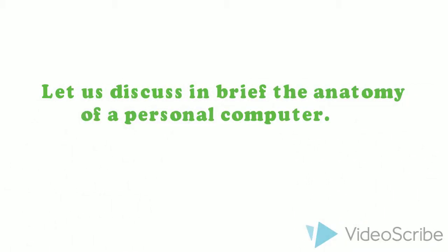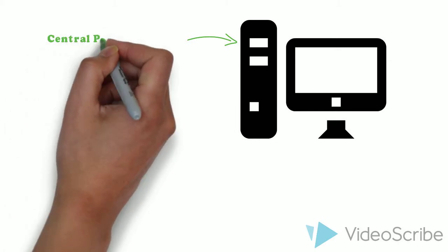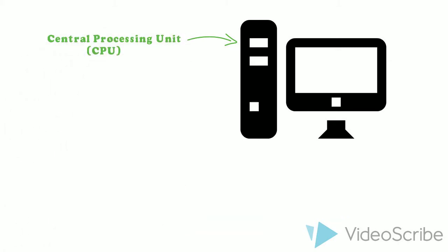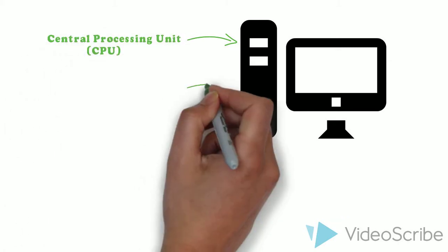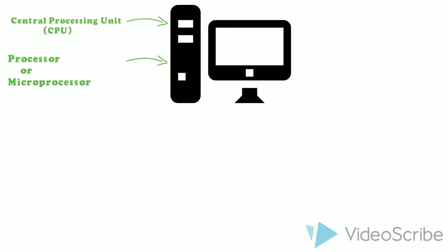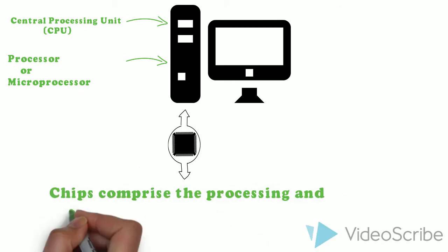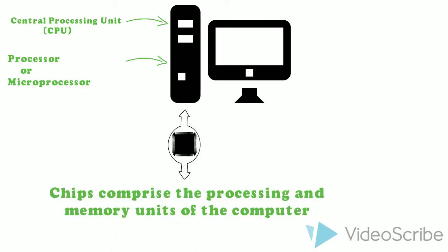Let us discuss and brief the anatomy of a personal computer. At the heart of the computer lies the central processing unit, or the CPU, also known as processor or microprocessor. It consists of integrated circuits, also known as chips. Chips comprise the processing and memory units of the computer.